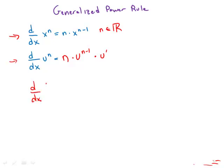It might be clearer for some students if we write this instead in function notation. The derivative of f of x to the power of n is n times f of x to the n minus 1 times f prime of x.